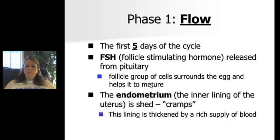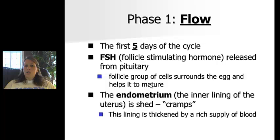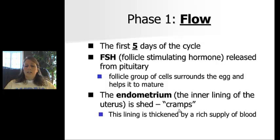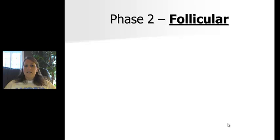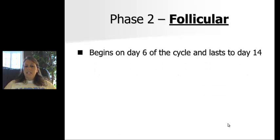FSH also acts on the endometrium, which is the lining of the uterus. As we go through the menstrual cycle, that lining will increase or thicken in anticipation that a developing embryo will be implanted after fertilization. When that lining sheds — meaning it breaks down and leaves the body — muscle contractions cause the cramping. There is a very rich blood supply that causes the lining to thicken.